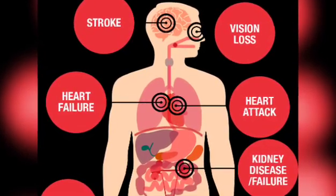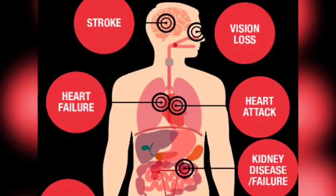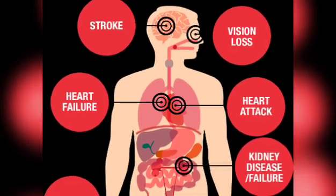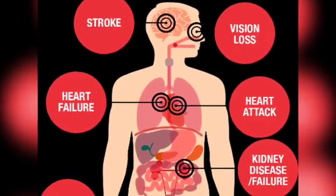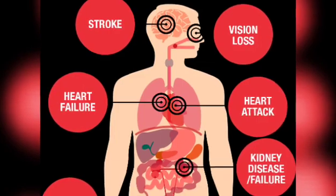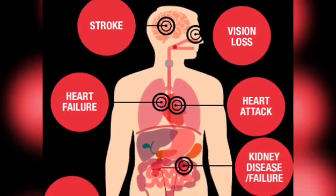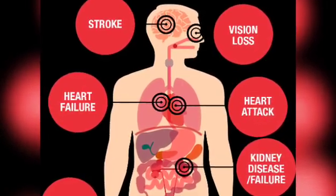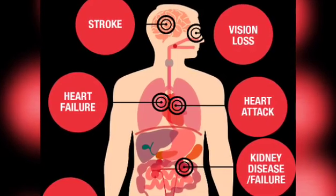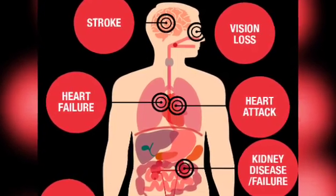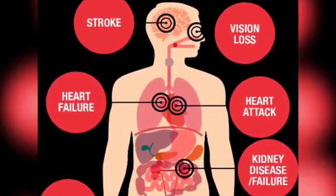In this video you can see that when our body's organs stop functioning properly, it causes diseases. Kidney diseases occur due to kidney failure, heart diseases occur due to heart failure, and stroke and vision loss also occur due to problems in the brain and eyes.